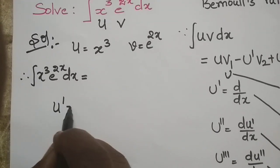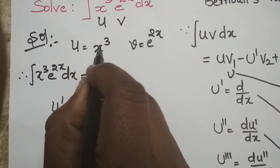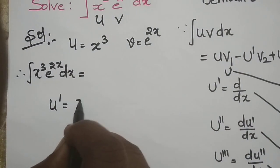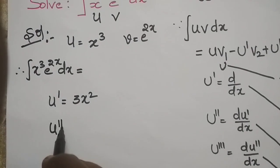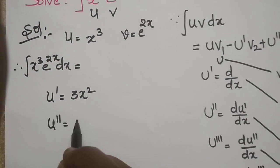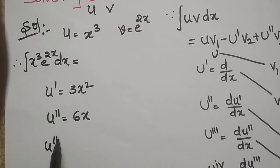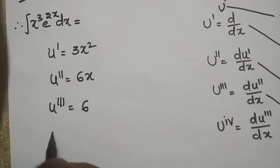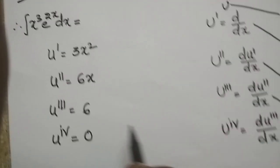The first derivative u' equals the differentiation of x cubed, which is 3x squared. u'' equals the differentiation of 3x squared, which is 6x. u''' equals 6. And the fourth derivative of u is 0.